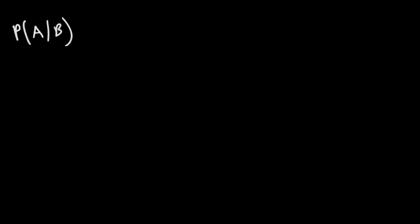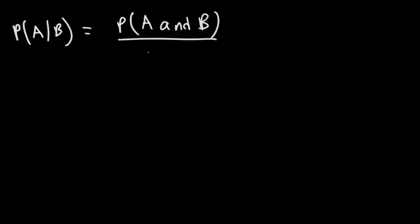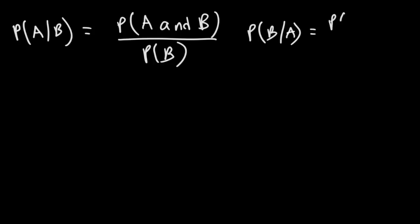The probability of event A occurring, given that event B has already occurred, is the probability that event A and B will occur divided by the probability that event B will occur. Likewise, the probability of B given A is equal to the probability of B and A occurring divided by the probability that event A will occur.